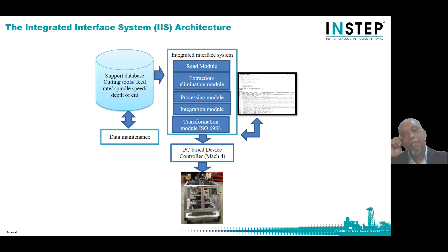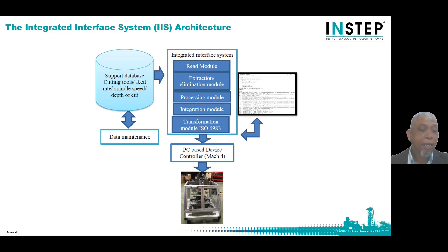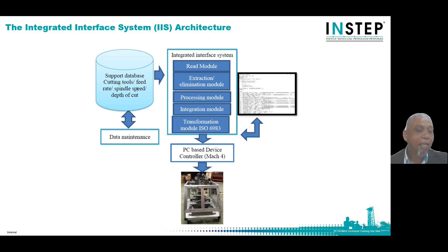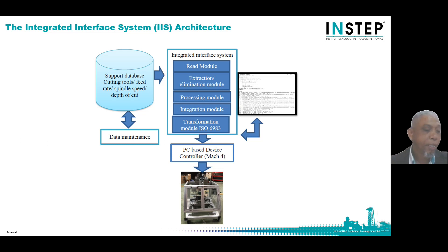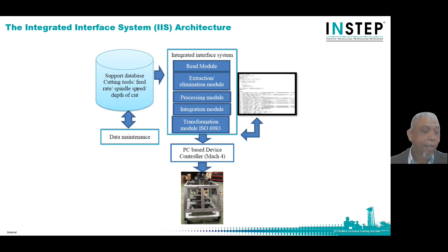This slide describes the integrated system ISS architecture. Number one is the data extraction module, which reads STEP 5 line by line to extract geometric data. The data elimination module eliminates repeating and irrelevant data from the database. Next, the data processing module processes the data according to specific instructions, determining work plan, workpiece boundary, and feature boundary. The integration module integrates user inputs — feed rate, speed, and depth of cut — with geometric data. And the G-code generation module writes G-code using the processed data.